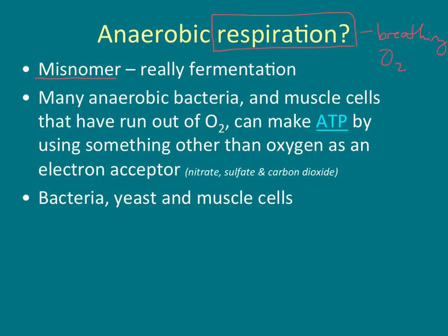There are anaerobic bacteria, and as we discussed in class, you can run at an oxygen debt if you're sprinting. Muscle cells can run out of oxygen and continue to make a little bit of ATP for short periods of time — you can sprint for a short period, but not forever. So fermentation is another way to generate that small amount of ATP, and it occurs primarily in bacteria, yeast, and in your muscle cells.